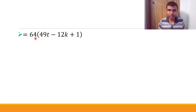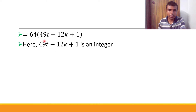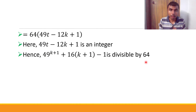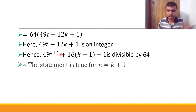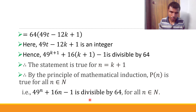Our task is done. We began with the expression 49^(k+1) + 16(k+1) - 1 and showed it equals 64×(49t - 12k + 1), where (49t - 12k + 1) is an integer. So the expression is divisible by 64. Therefore, the statement is true for n equal to k plus 1, and by mathematical induction, the statement is true for all n belonging to the natural numbers.